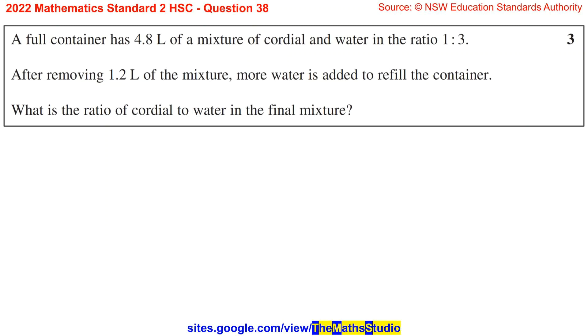Question 38. A full container has 4.8 litres of a mixture of cordial and water in the ratio 1 to 3. After removing 1.2 litres of the mixture, more water is added to refill the container. What is the ratio of cordial to water in the final mixture?